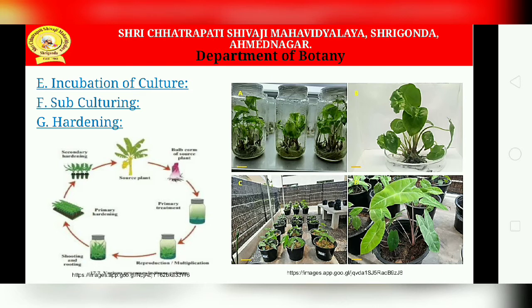Some tissues grow well under low light conditions. For regeneration, light and dark periods are needed. For regenerated plantlets, well-lighted conditions of approximately 300 to 3000 lux are required. Incubation conditions depend upon the species — light and temperature must be maintained in the incubation chamber.